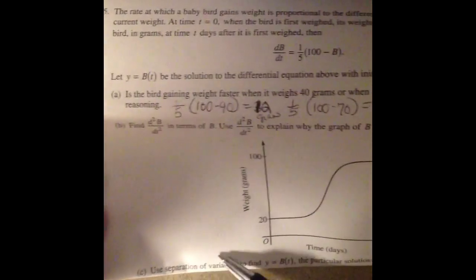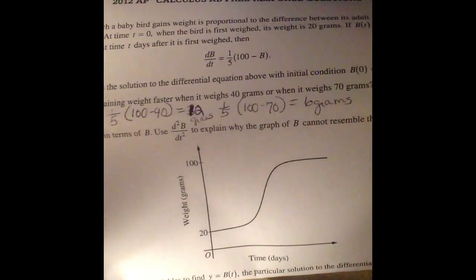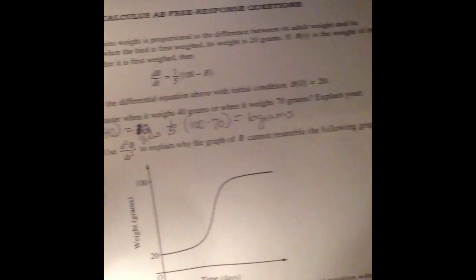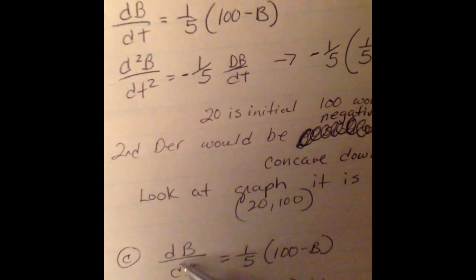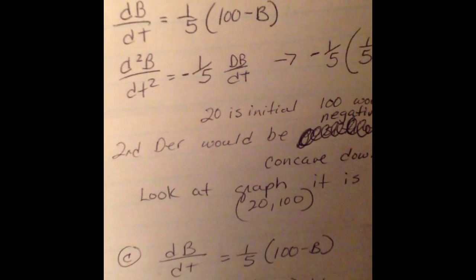Now part 3 says use separation of variables to find y = b(t), a particular solution with initial condition of b(0) = 20. So let's take a look at c. Okay, so we're going to start with our derivative.